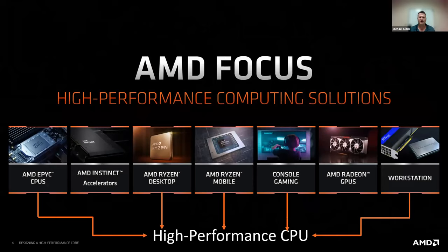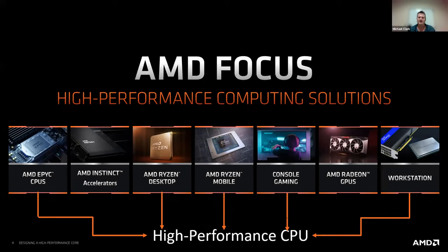Here at AMD, our focus is on high performance computing solutions, which spans a wide range of products. We have our EPYC server CPUs, our Instinct accelerators, our Ryzen desktops, Ryzen mobile for laptops, high performance into console gaming, AMD Radeon discrete GPUs, and CPUs for workstations. While our cores and CPUs don't go into all these products, they go into the majority. That's part of the challenge of being an architect — they all want high performance compute, and we don't want to build a fully unique core for all of them, so we try to balance all the properties of these different products with the minimum of change within a core.